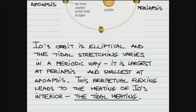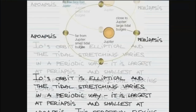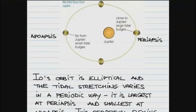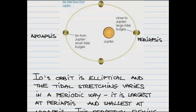If you take a piece of wire and bend it back and forth repeatedly, you will notice that the place undergoing constant stretching gets a little bit hotter. The mechanical energy supplied by bending it is eventually transformed into heat. The same sort of thing is happening with Io.